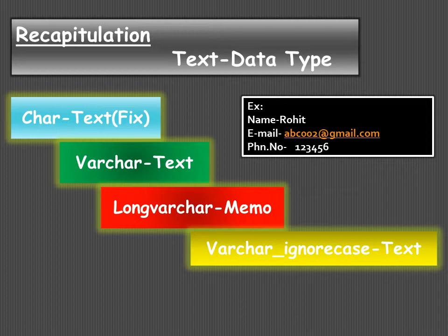CHAR and VARCHAR — the most important difference is that CHAR is a fixed length data type and VARCHAR is a variable length data type. In the case of CHAR there is wastage of memory space, but in the case of VARCHAR there is no wastage of memory space, because whatever length you specify — for example, if the name is 'Rohit' with length five — it will occupy only five bytes.